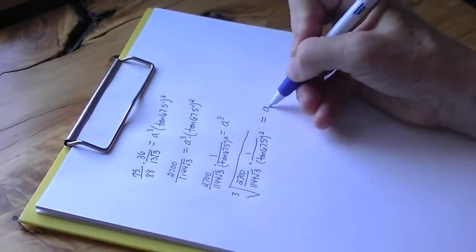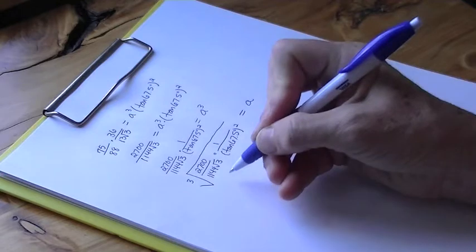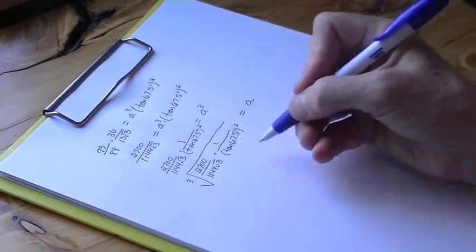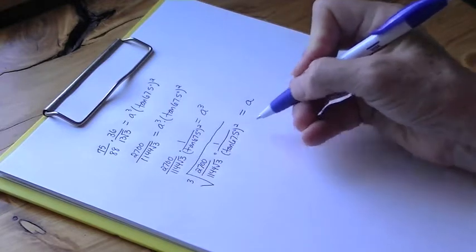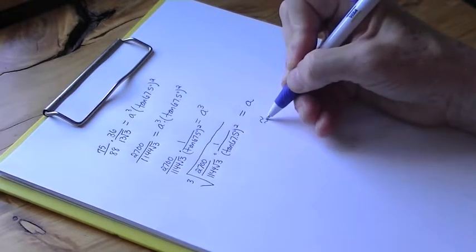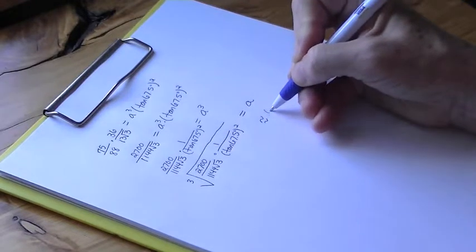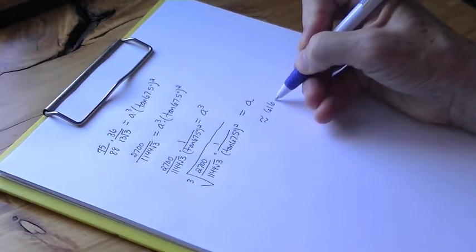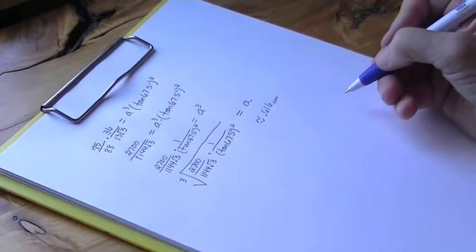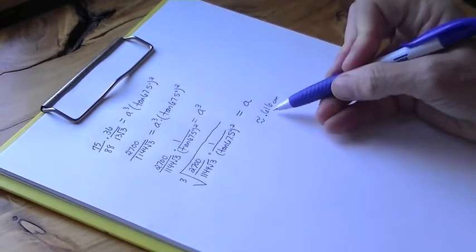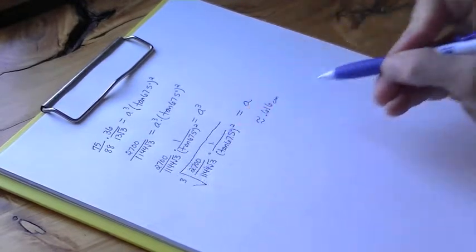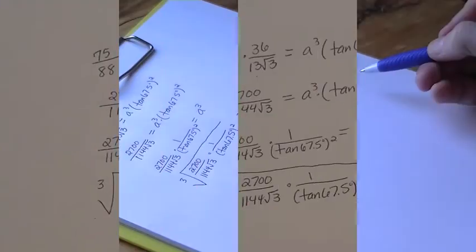That is the exact length that a needs to be — exactly equal to the cube root of this fairly messy value. By the way, that is approximately 0.616 centimeters. So when we cut our diamond, we approximately need it to be 0.616 centimeters, but the cube root expression is the exact value.